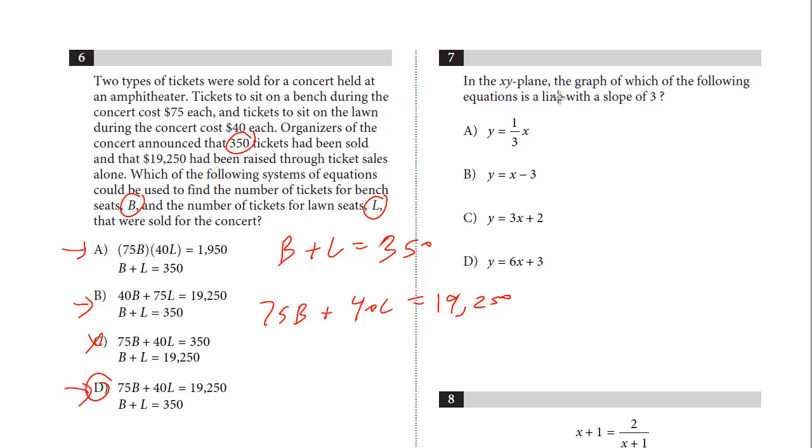Number seven, in the XY plane, the graph of which of the following equations is a line with a slope of 3? So especially if it's in slope-intercept form, we're just looking, we know Y equals Mx plus B right away. This one doesn't take long at all. The Y-intercept is 2. The slope is 3. The answer is C.